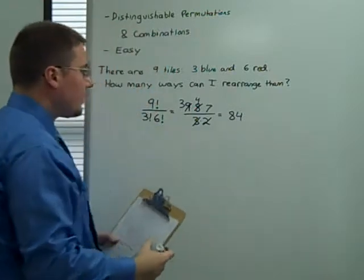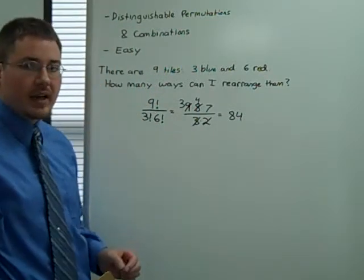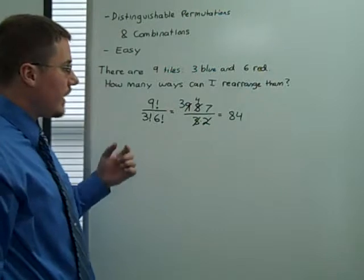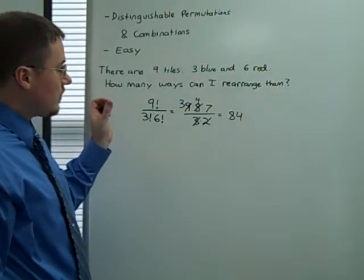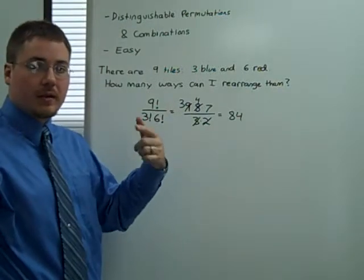So there are 84 ways that I could rearrange nine tiles of three blue and six red, such that we don't really care about the repetition.